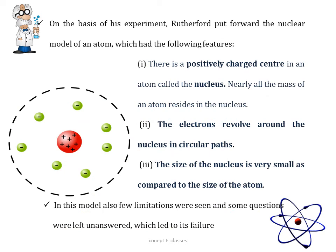On the basis of his experiment, Rutherford put forward a nuclear model of an atom which had the following features. First, he found out that there is a positively charged center in an atom called the nucleus and nearly all the mass of an atom resides in the nucleus. There are electrons that revolve around the nucleus in circular paths. The size of the nucleus is very small as compared to the size of an atom. But this model also had a few limitations and some questions were left unanswered.